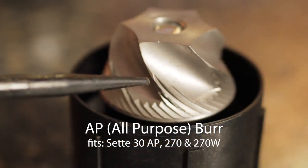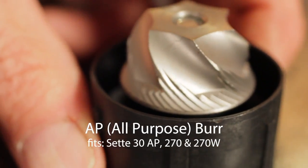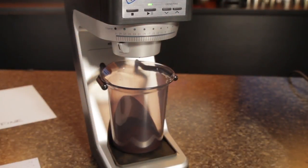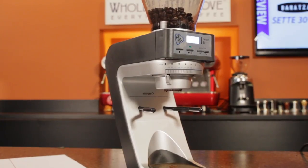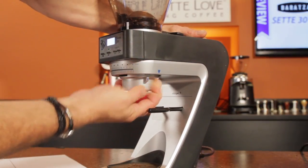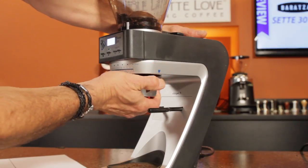Switching out from the stock AP Burr to the brew grind burr is quick and relatively easy. Shut off the bean hopper and grind out any remaining beans. Then remove the burr assembly by turning the grind size adjustment beyond the coarser setting until the notch lines up with the blue arrow. From there, just pull it out.